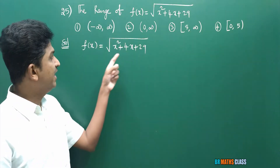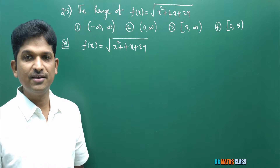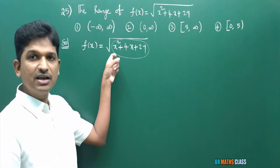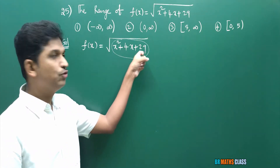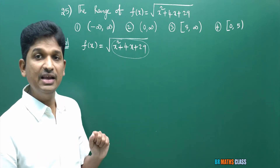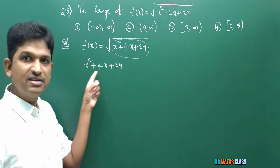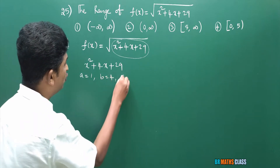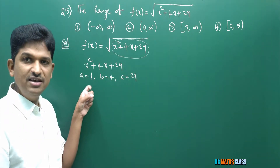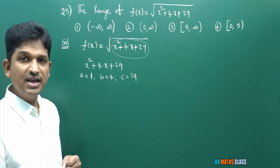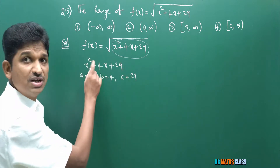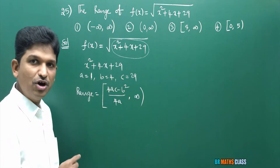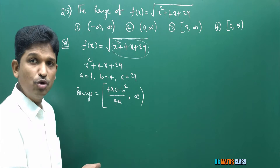First, I will consider the given function: f of x is square root of x square plus 4x plus 29. What I will do first is calculate the range of the inner expression x square plus 4x plus 29, and later calculate the range of the square root of that expression. In x square plus 4x plus 29, A is 1, B is 4, C is 29. A is 1, which is greater than 0. So to calculate the range of this expression, the formula is the interval [4AC minus B square divided by 4A, infinity).